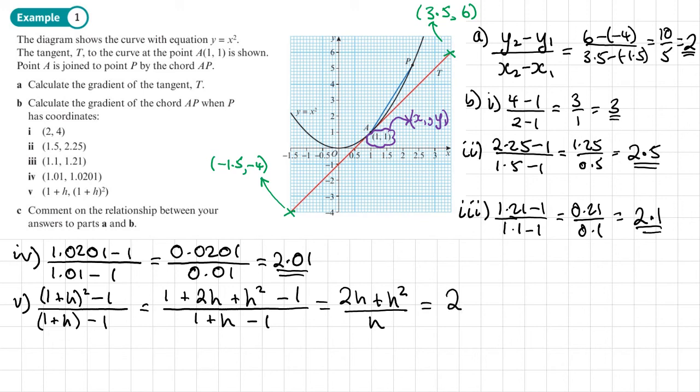If we divide through by h, we're just going to end up with 2 plus h for our gradient. Lastly, part c says comment on the relationship between your answers to part a and part b. The answer to part a is the exact gradient.